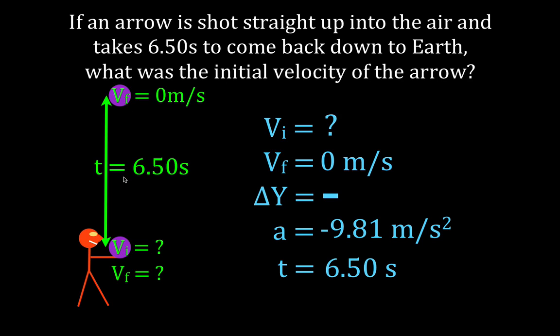We're only considering the up portion of the path. We're given the time as for up and down. The time up is equal to the time down. So the time up and the time down are each half of this. We're only considering the up portion. So therefore, the time we're going to use is 3.25 seconds, half of 6.5.